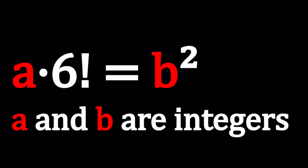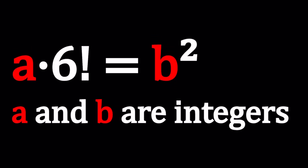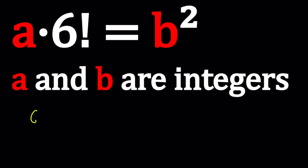Now, when you see a problem like this, you are probably thinking about the prime factorization. So the first thing we're going to do is look at the prime factorization of 6 factorial, and notice that on the right-hand side we have a perfect square. So, 6 factorial is 720. You can either write it like that, or you can write it as 6 times 5 times 4 times 3 times 2 times 1, and then break it down that way.